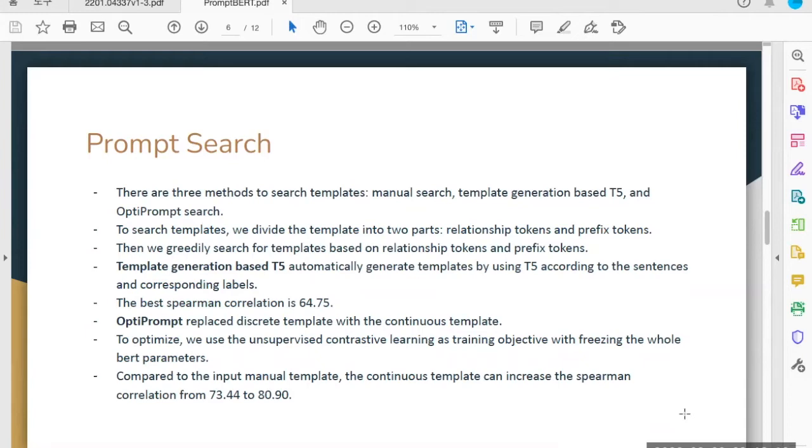The next method is OptiPrompt. This method replaces the discrete template with a continuous one. To optimize the continuous template, we freeze the BERT parameters and the continuous template is initialized by manual template embeddings like token embeddings. Compared to the input manual template, the continuous template can increase the correlation from 73 to 80.90.